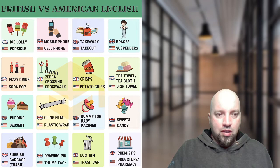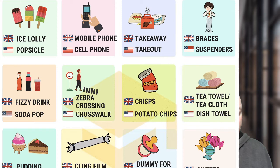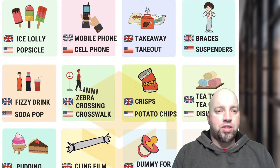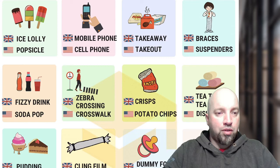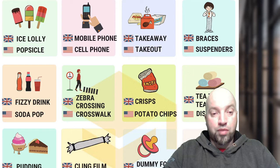'Plaster' and 'band-aid' — we would say 'band-aid.' 'Pitch' and 'field' — we would say 'field.' 'Ice lolly' or 'popsicle' — in Canada we would call it a 'popsicle.' 'Mobile phone' or 'cell phone' — in Canada 'cell phone' would be the more popular term, but we would also say 'mobile phone.' We don't usually say 'mobile' by itself though. 'Takeaway' and 'takeout' — in Canada we would say both: 'would you like that to dine in or take away,' or 'I'm gonna go to the takeout and order some food' — both are correct.